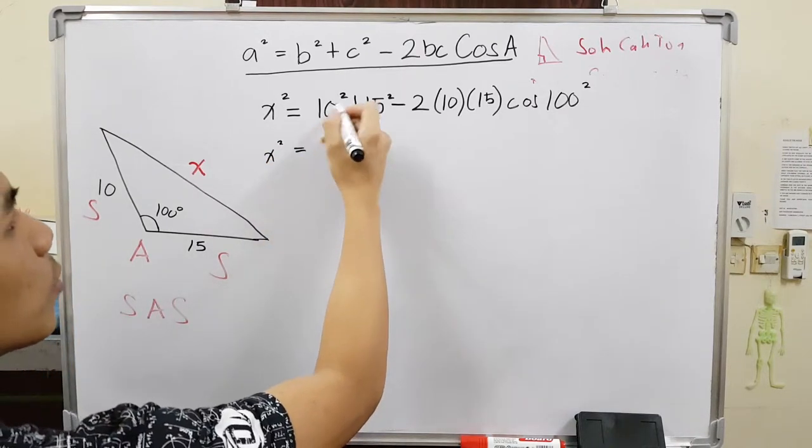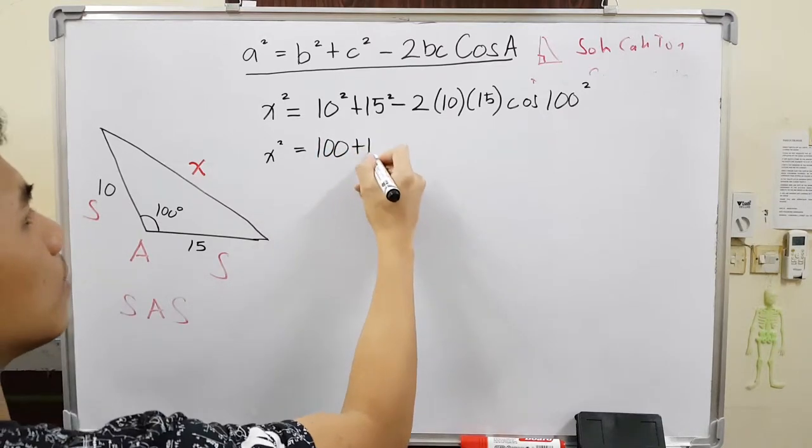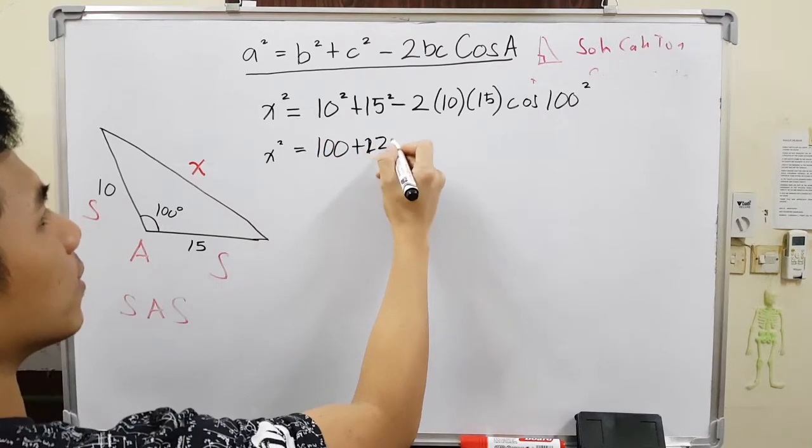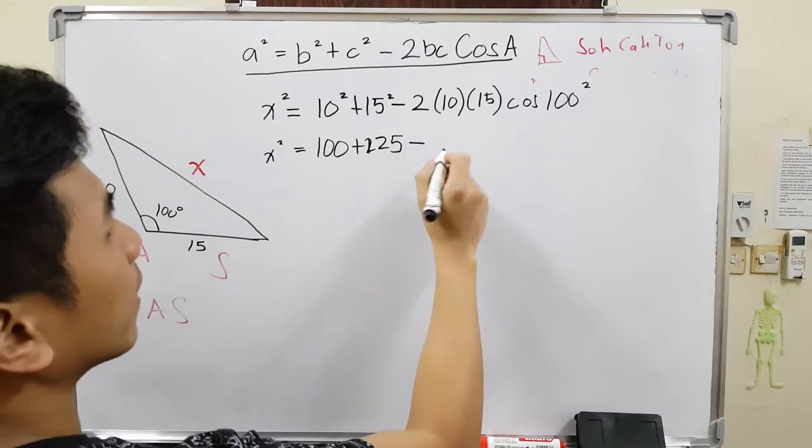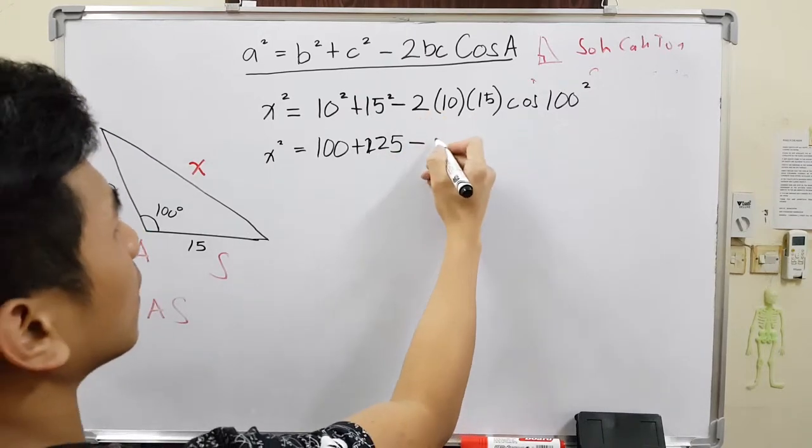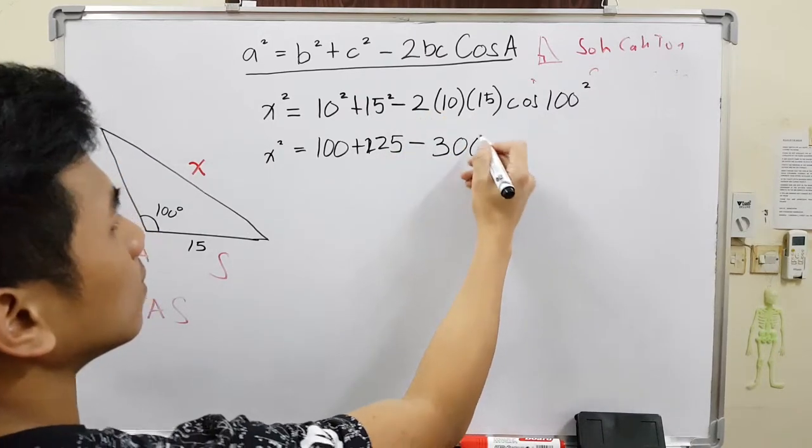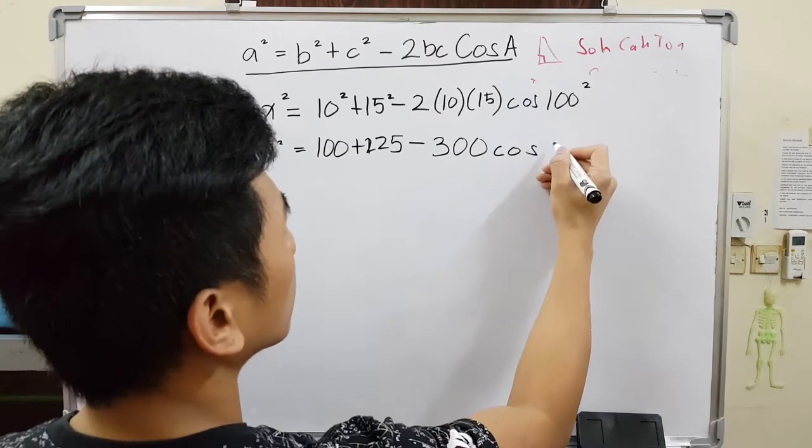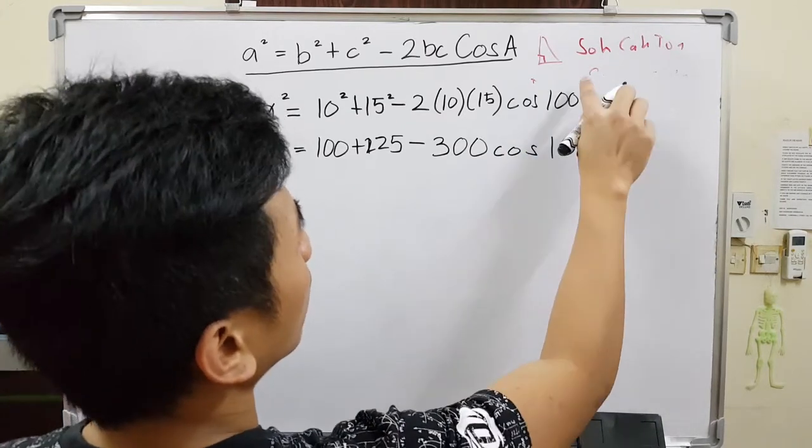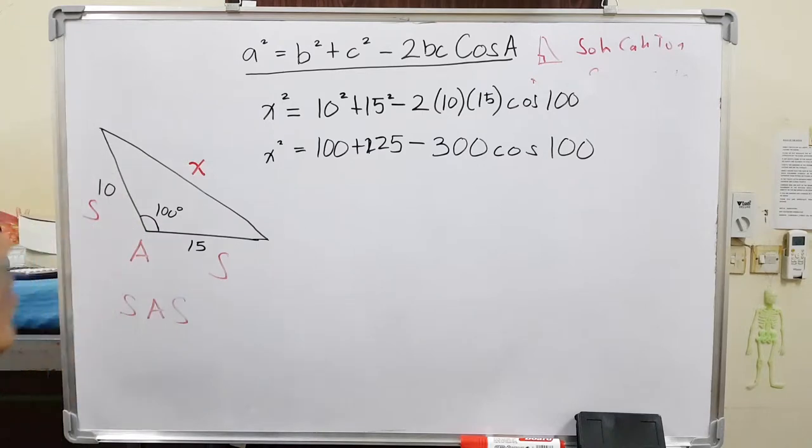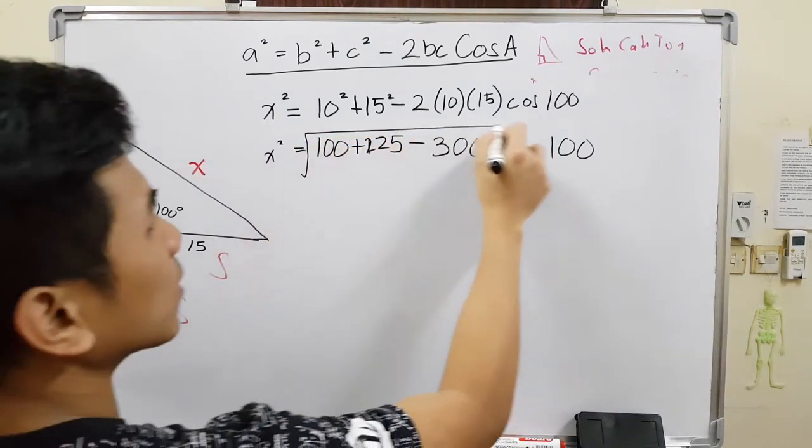So I'm going to simplify it one by one. x squared is equivalent to 10 squared. So 100 plus 225 minus 20 times 15, 300, cosine 100. Sorry, I should remove the square in there. And you can just put this directly on the calculator.